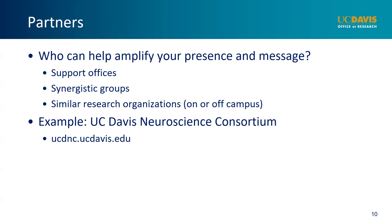The website they have created, which you can find at ucdnc.ucdavis.edu, works to help the user understand the size and nuances of this research area at UC Davis, reducing confusion about who does what and shining a light on programs and potential partnerships that may otherwise get lost in the vastness of activity. One of the reasons I know about this website is they reached out to our office for help when creating the consortium. In fact, they reached out to a lot of departments, colleges, and offices for help, which brings me to my final point.